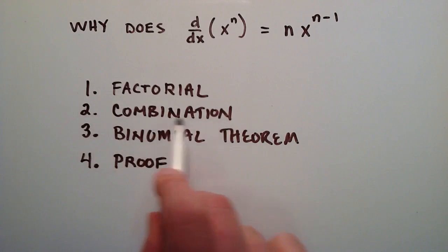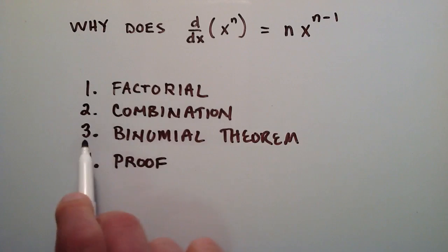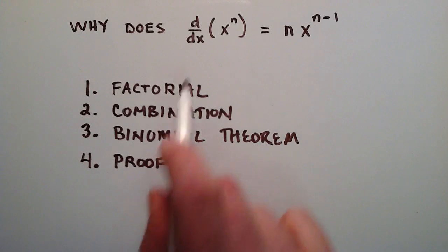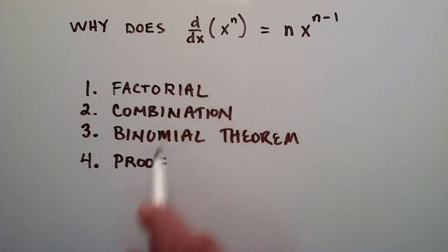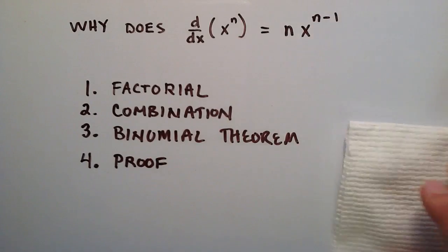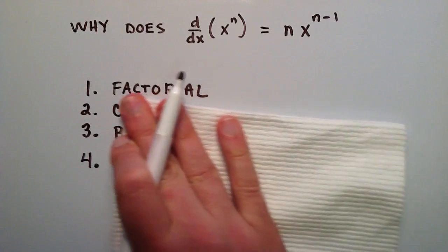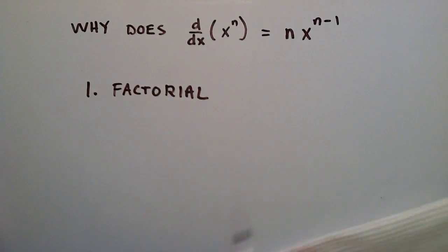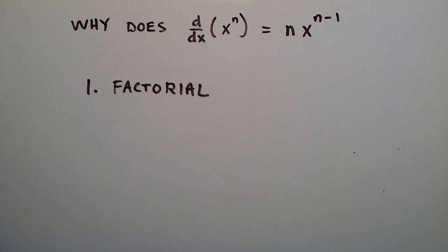So in this first video, I'll just quickly discuss factorials. And in the next video, I will discuss combinations. Video number 3, I will be explaining the binomial theorem. And in the fourth video, I will actually be showing you why this is the case by using all of these things to kind of show you how this proof works. So anyway, so for this first video, video 1, we're just going to focus on a factorial. So if you already know what a factorial is, you can go ahead and skip ahead to video 2.